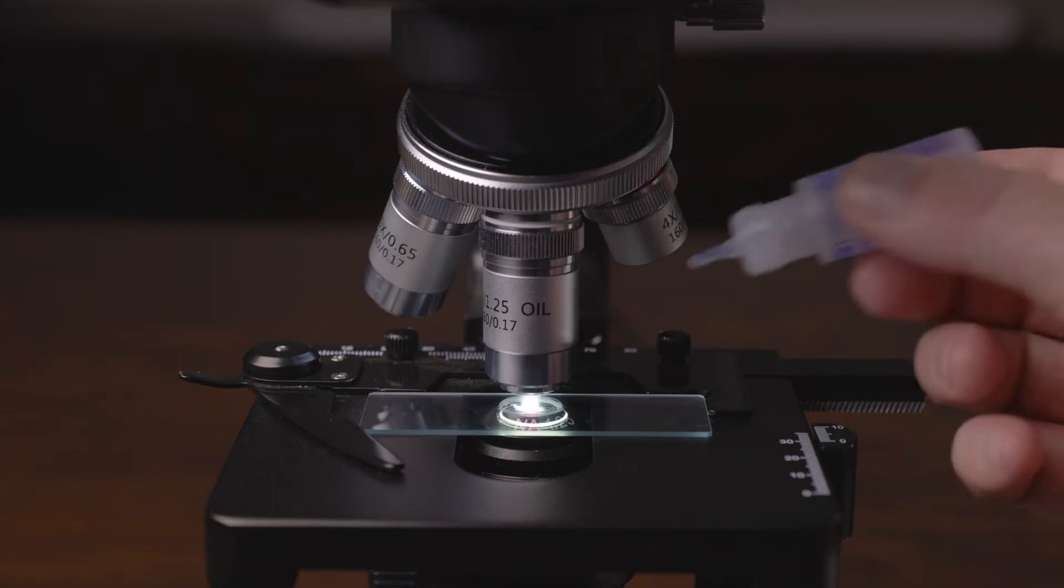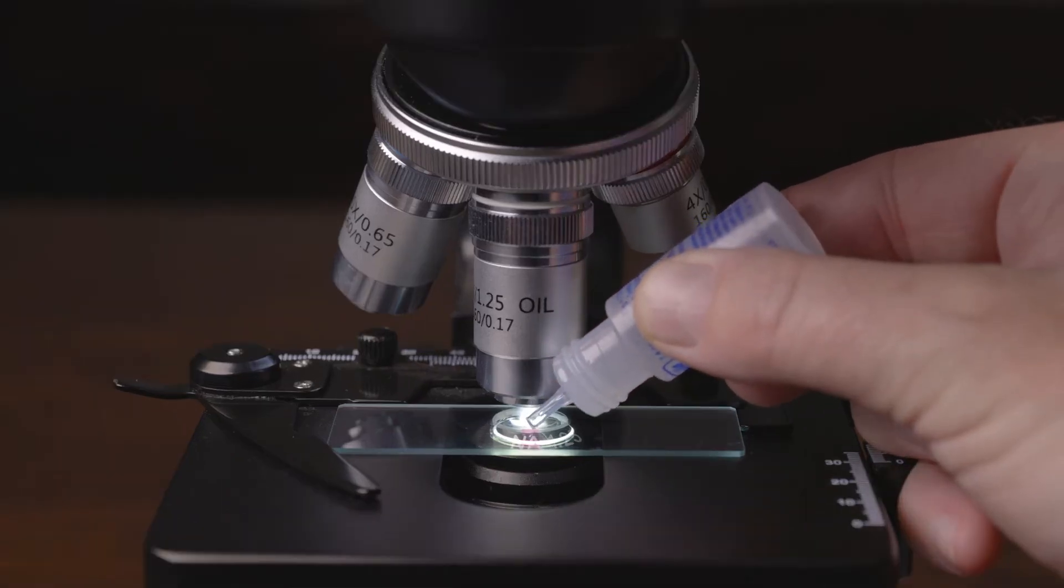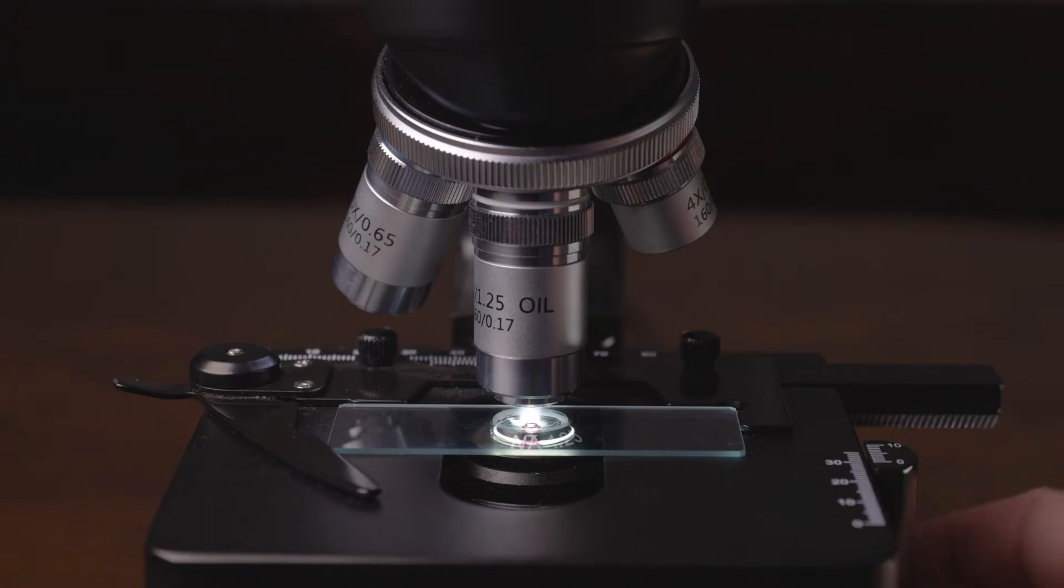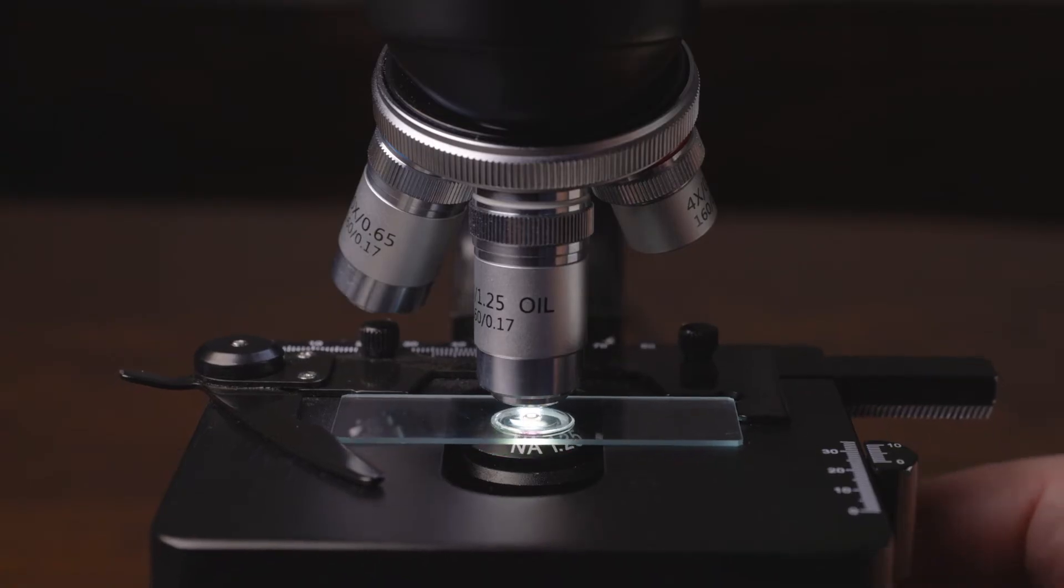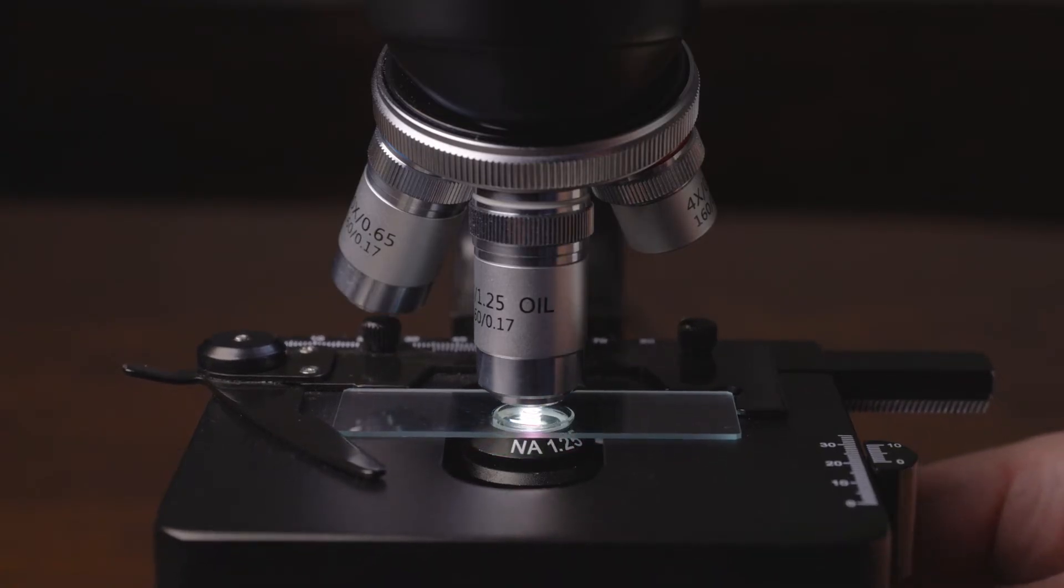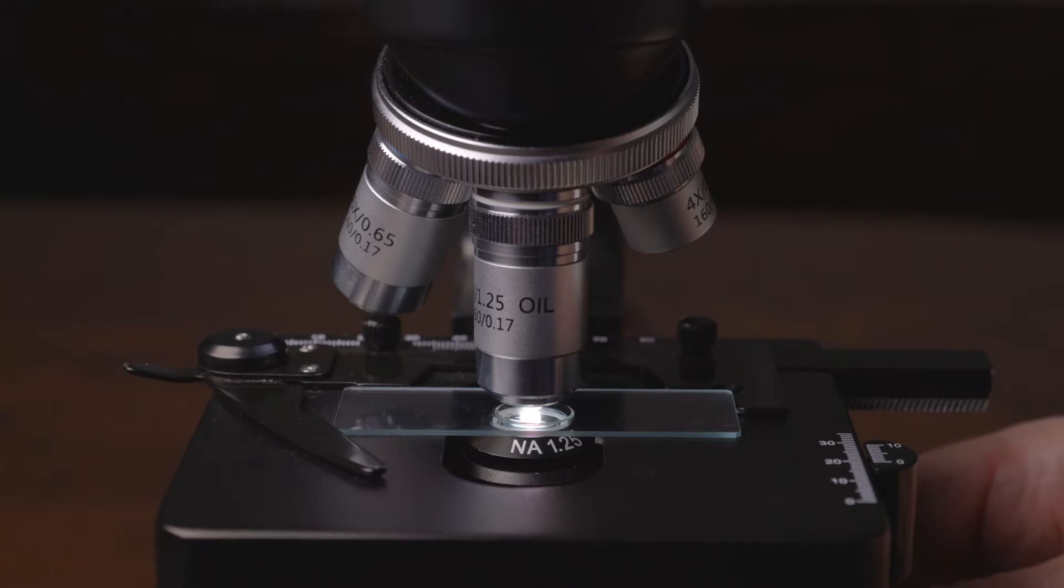To proceed, simply place a small drop of immersion oil onto the slide. Once done, reposition the slide so that the objective lens comes into contact with the oil. After this step you can then adjust the focus for a clear view.